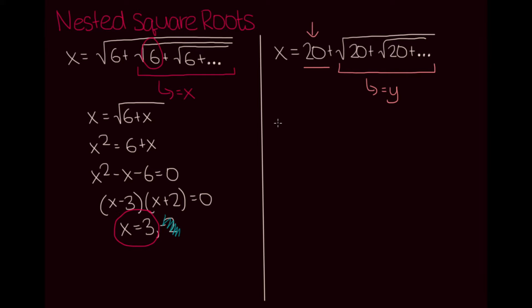If I write out y for clarity, you'll notice that what we have here is extremely similar to what we started with in our first problem. In our first problem, we had 6 inside of our nested square root, but now we have 20 instead.